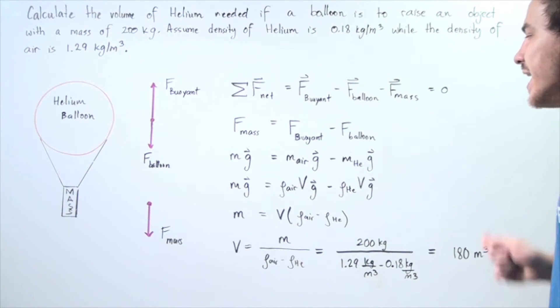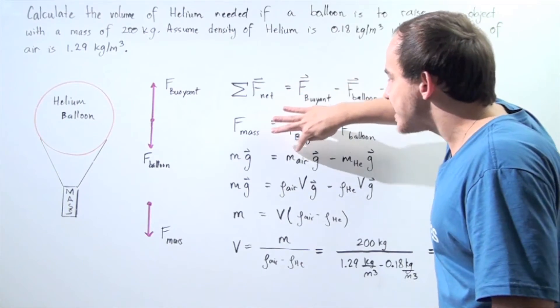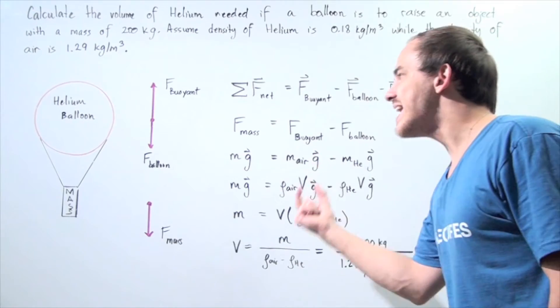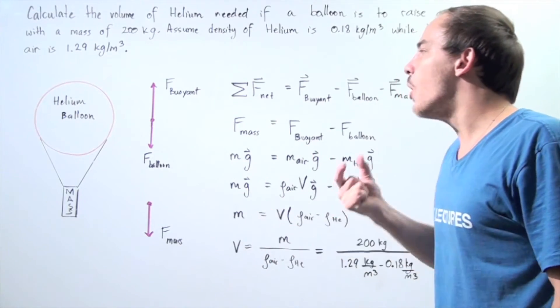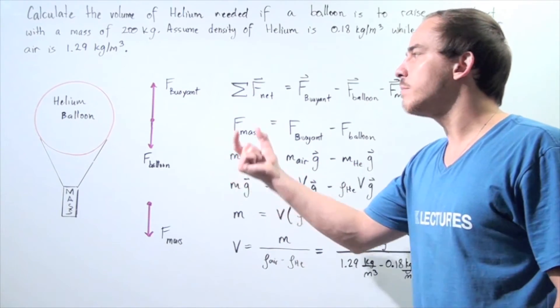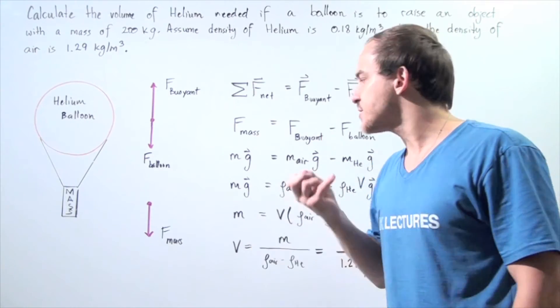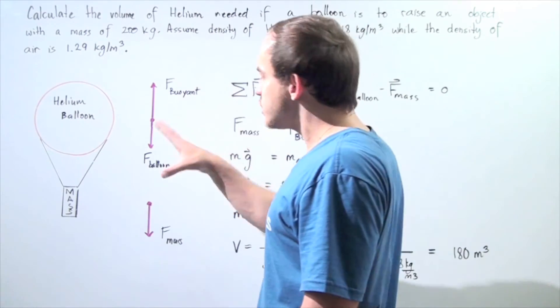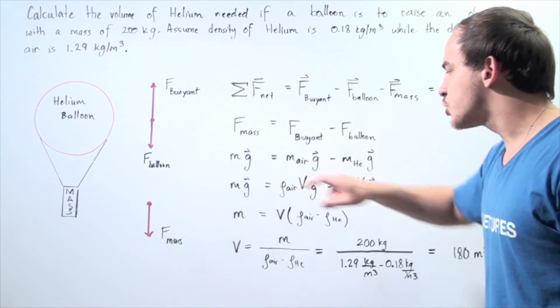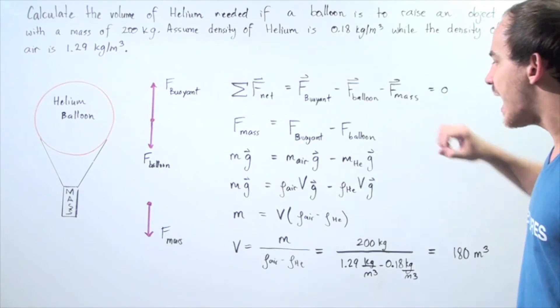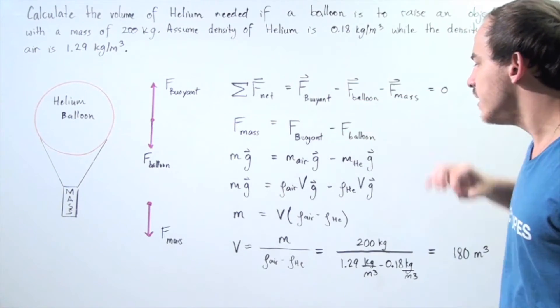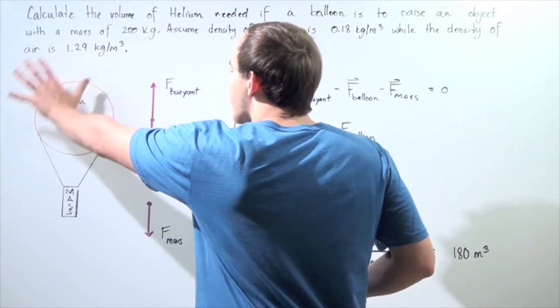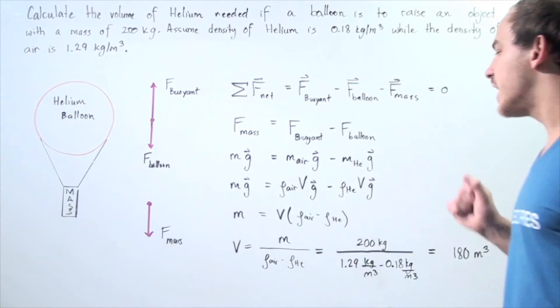Notice that the mass of the air displaced by our balloon is simply equal to the density of the air multiplied by the volume of the balloon. This is known as Archimedes' principle. So we apply Archimedes' principle to solve this problem. The mass of helium is simply the density of helium multiplied by the volume of our balloon multiplied by g.